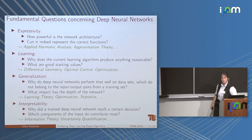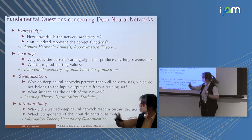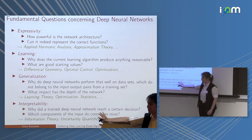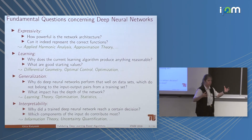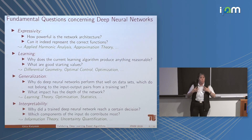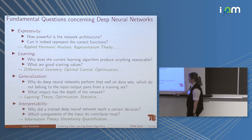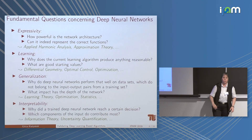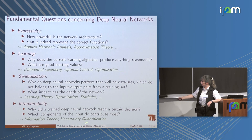One can argue that if we had a complete understanding of all the other three parts, maybe we wouldn't even need interpretability. But we always come into the situation where we have a fixed neural network obtained from somewhere, without any control on how it was trained, and then we need to interpret it. Questions there are: why did the neural network reach a certain decision, and which components are important? This talk will be about this last area.